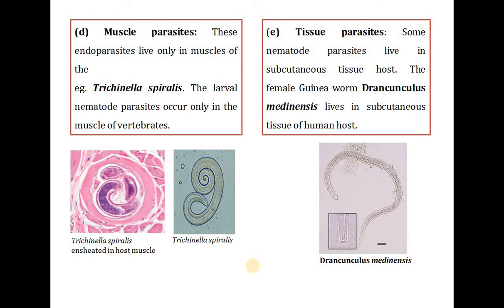The fourth type is muscle parasites. These endoparasites live only in muscles; an example is Trichinella spiralis, a larval nematode that parasitizes the muscles of vertebrates. The fifth type is tissue parasites. Some nematode parasites live in subcutaneous tissue; for example, the female guinea worm Dracunculus medinensis lives in the subcutaneous tissues of the human host.